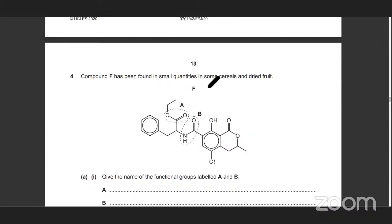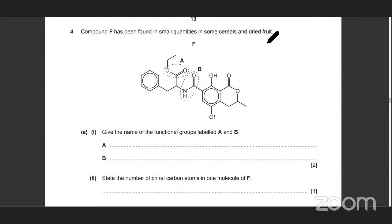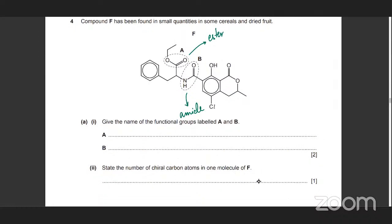Compound F has been found in small quantities in some seeds and dried fruit. Give the name of the functional groups labelled A and B. So this one is an amide, whereas this one is an ester. So you've got an amide and an ester functional group. State the number of chiral carbon atoms in one molecule of F. Chiral is when you have a carbon atom bonded to four different groups and it forms two non-superimposable mirror images. Remember benzene — all the carbon atoms in benzene have a pi electron cloud and they're not going to form chiral carbon atoms because they're not making four bonds.